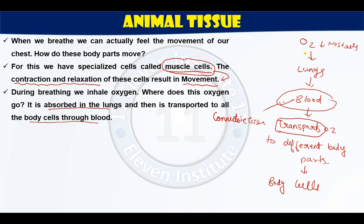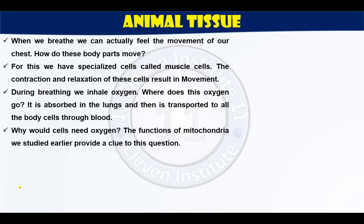We are inhaling oxygen from the nose, but it is distributed to all parts of the body — that is a type of connection. So blood is a connective tissue. Why do cells need oxygen? Oxygen is inhaled, goes to the lungs, from lungs it goes to blood, and from blood it goes to cells. We have discussed a term like this in a previous chapter: cellular respiration.